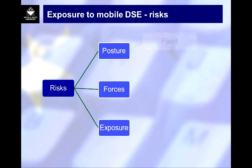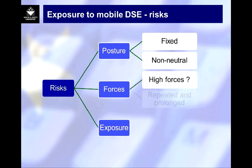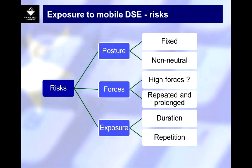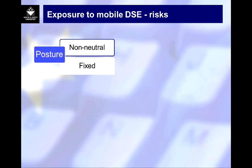We'll take a traditional approach of looking at traditional risk factors, which we know from all our musculoskeletal disorders research. These are familiar to anyone who's looked at MSD assessments like manual handling — the key risk factors are posture, force and exposure. For posture we look at fixed and non-neutral postures; for forces it's usually high forces but also repeated and prolonged forces; and exposure is about duration and repetition. Let's see if these risk factors come into play with mobile devices like tablets and mobile phones.